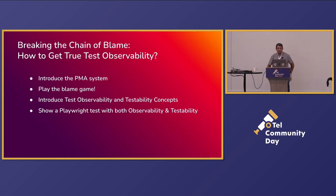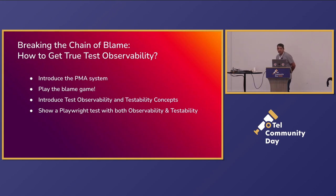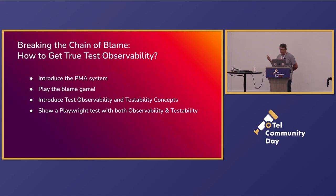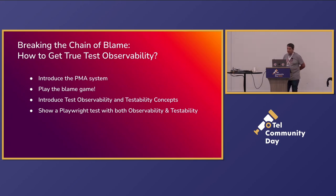We're going to cover four things. We're going to introduce the system under test and the tests — we're running a Playwright test on the system, but I'm going to explain what the system is. We're going to play the blame game, so we're going to have a problem on the test and we're going to try to figure out what it is. We're going to introduce a couple of concepts, and then we're going to show a Playwright test utilizing those concepts.